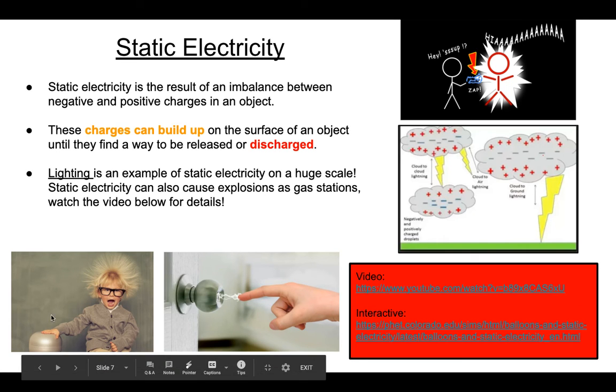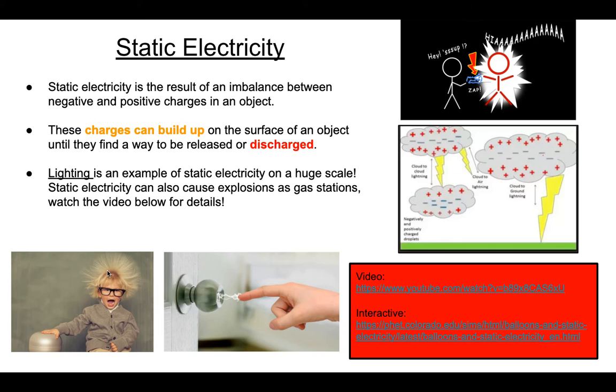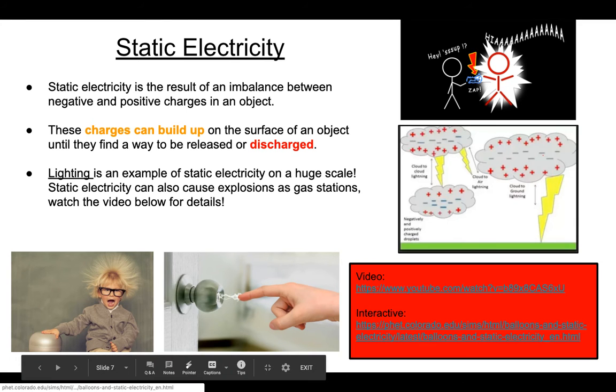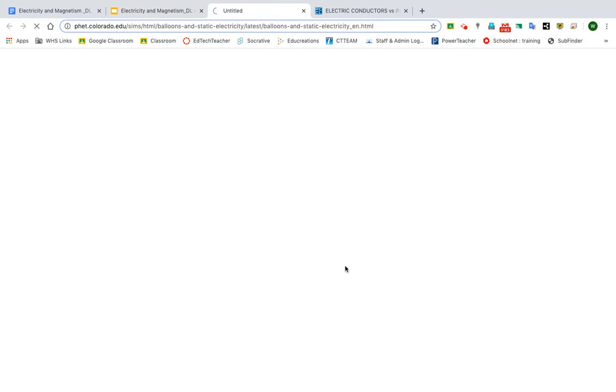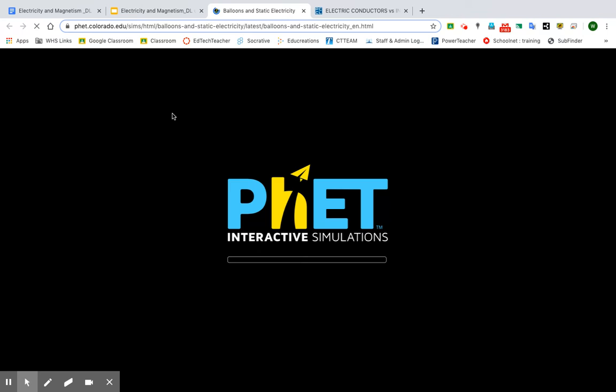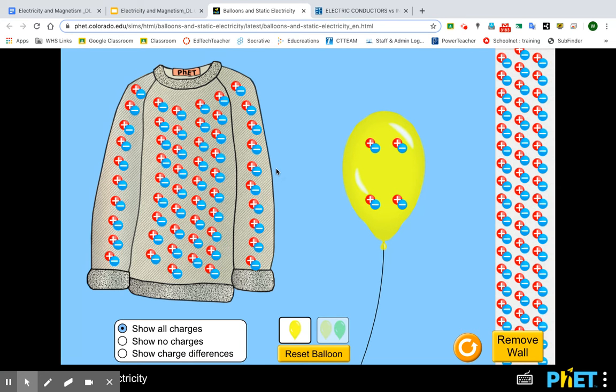This thing, the van der Graaf machine, if you touch it, it'll pass electrons into you but in a safe quantity. So this little kid has static electricity making his hair stand up. Lightning, just a huge example of static electricity. And then over here, just a cartoon. Now this interactive. Oh, yeah! This is a good one.